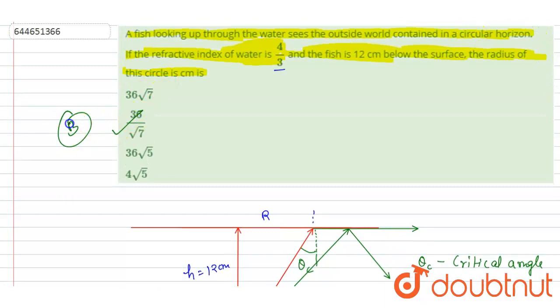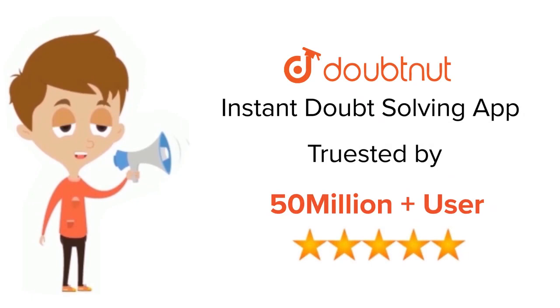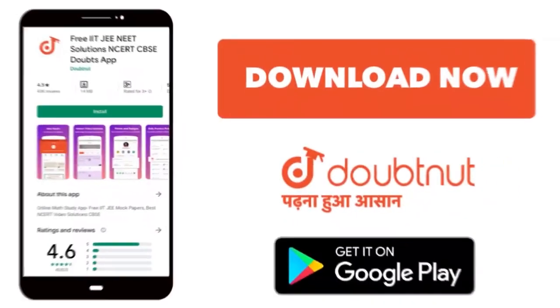B is the correct answer. Thank you. For class 6 to 12, IIT, and NEET level, trusted by more than 5 crore students. Download Doubtnut app today.